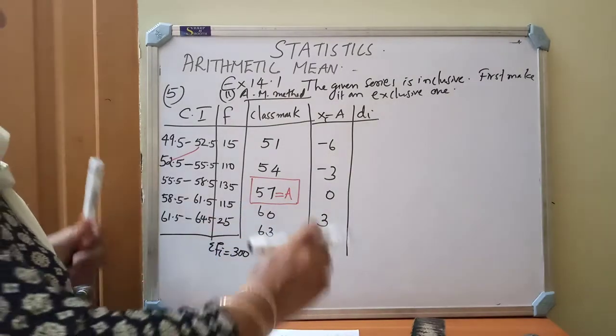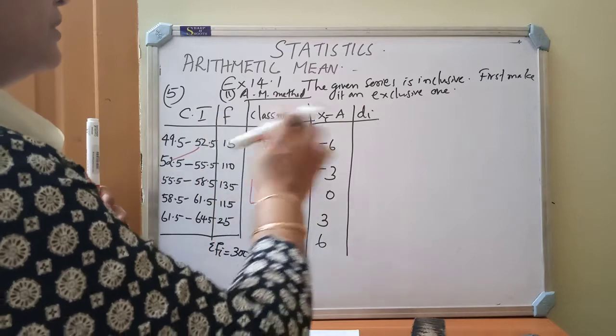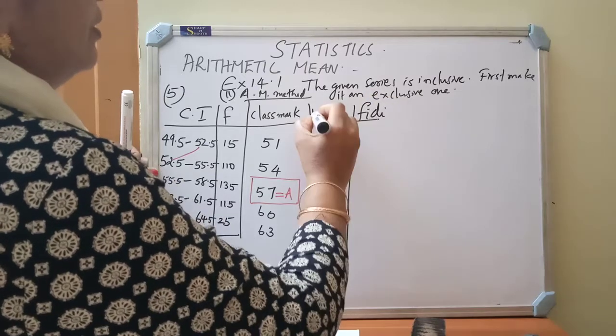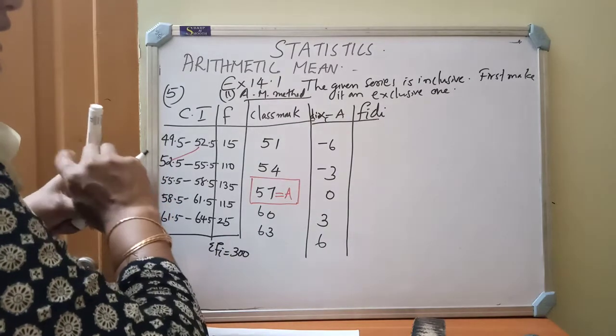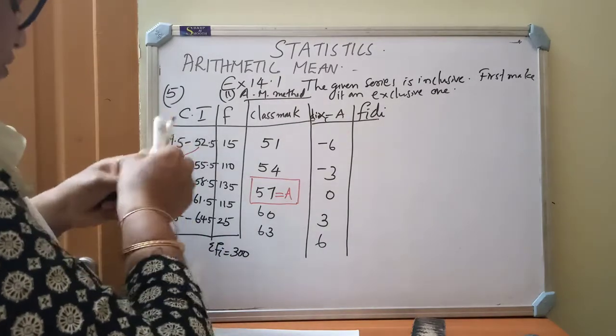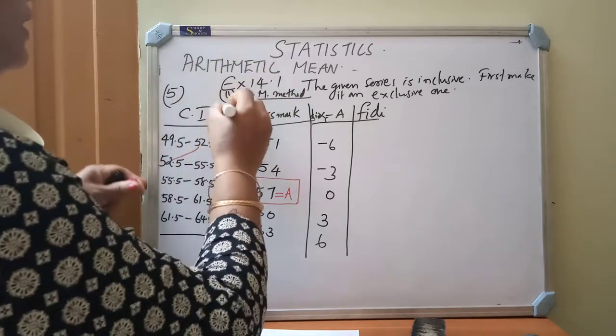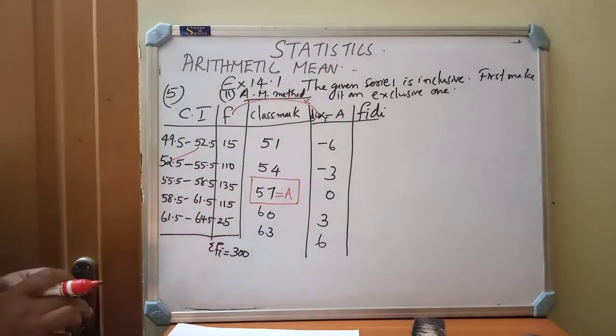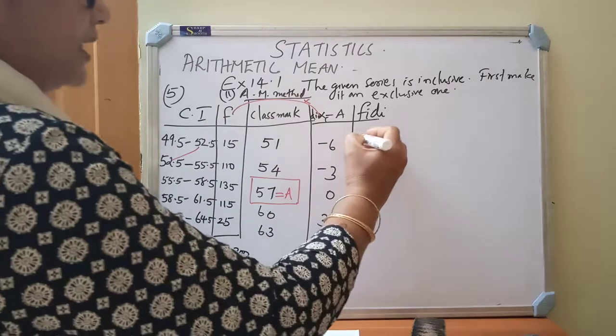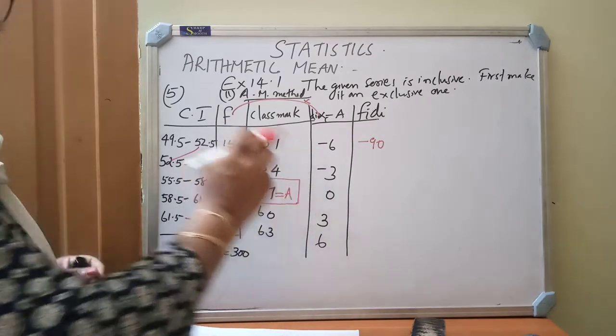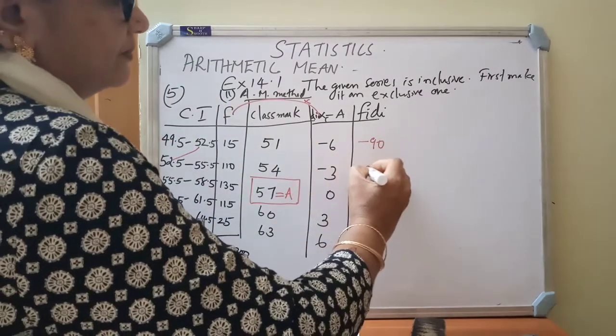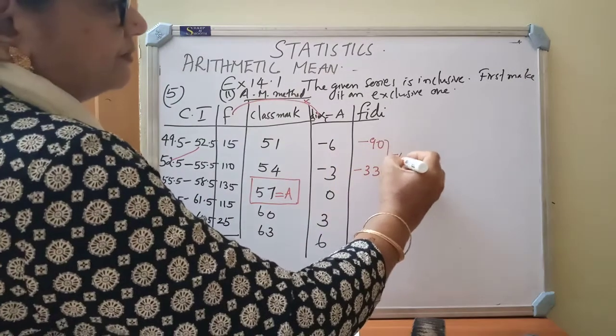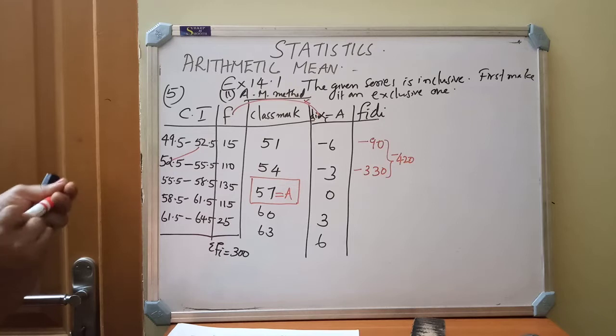Then di. This is di. This is fi di. Di equal to x minus a. Then fi di. The multiplication of fi di: this is our f value, this is our d value. The product of these two columns you must write here. 15 into minus 6 is minus 90. Then 110 into minus 3 is minus 330. So automatically you find out the sum of these two. What are you getting? Minus 420.